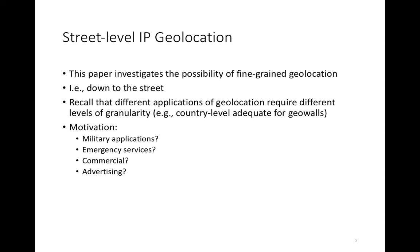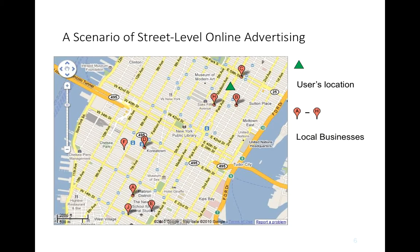Recall that different applications requiring geolocation need different levels of granularity. If we're talking about geowalls, for instance, the BBC iPlayer may only need country-level IP geolocation. So when might we be interested in much finer-grained IP geolocation? We can envision military applications where we'd like to know precisely the location of a target. Similarly, in the last lecture we talked about emergency services — also an application requiring street-level geolocation. And in the commercial or advertising space, that's the motivation given in the Northwestern paper.